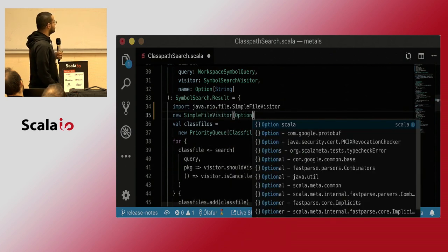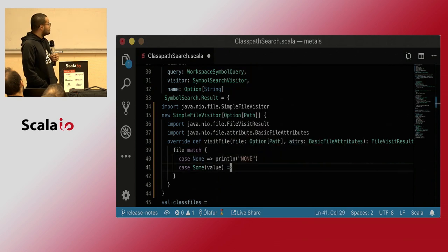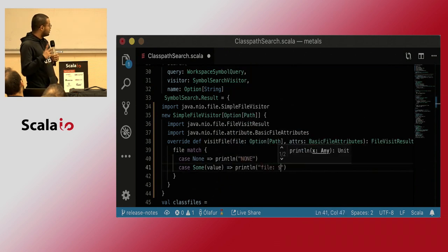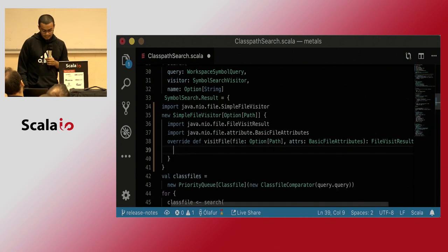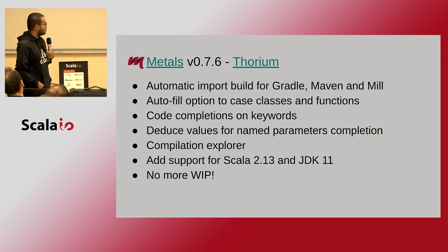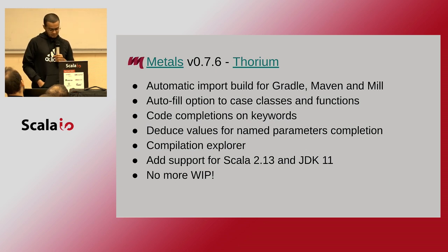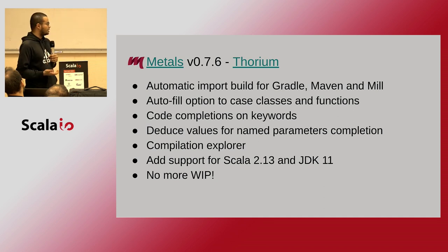Metals also provides completions for exhaustive pattern matching on sealed traits — you can generate a pattern match based on a sealed trait — and it supplies all missing imports for that particular scope. Until about two months ago it was considered experimental, but now it is the official Scala Language implementation.